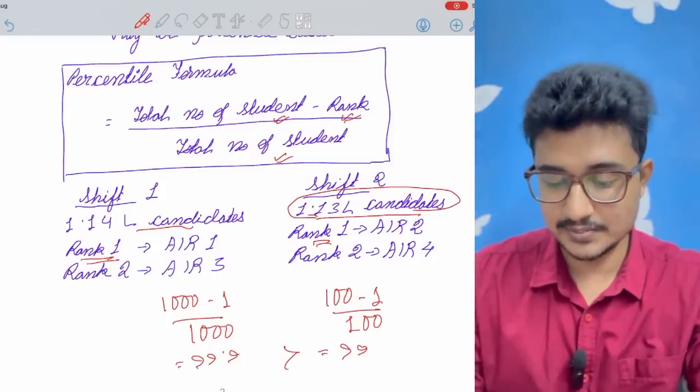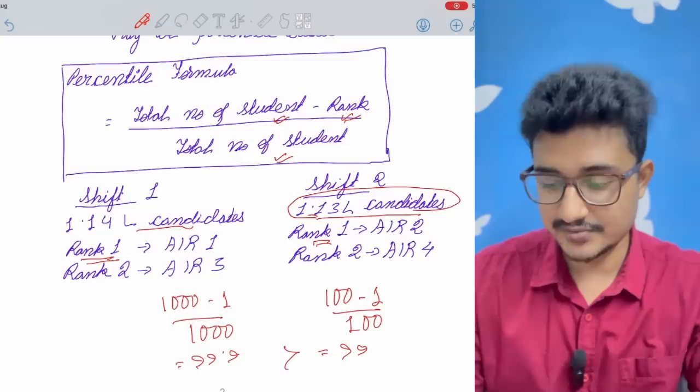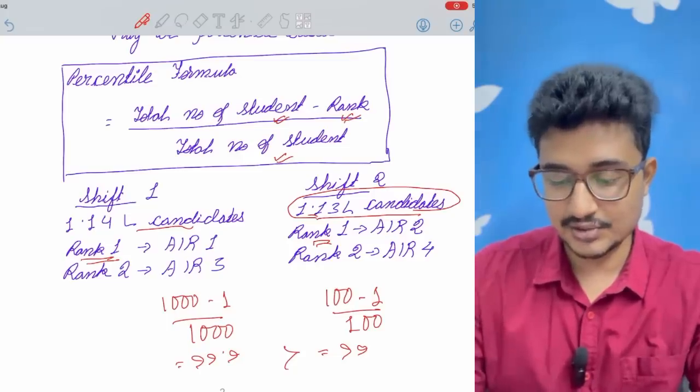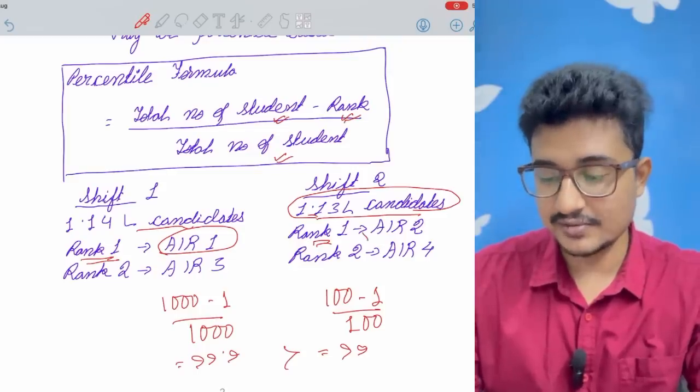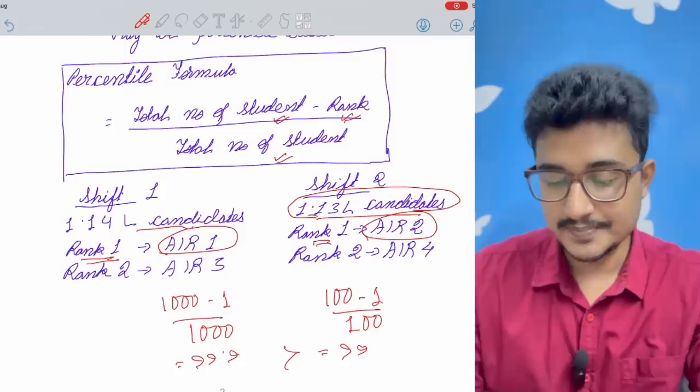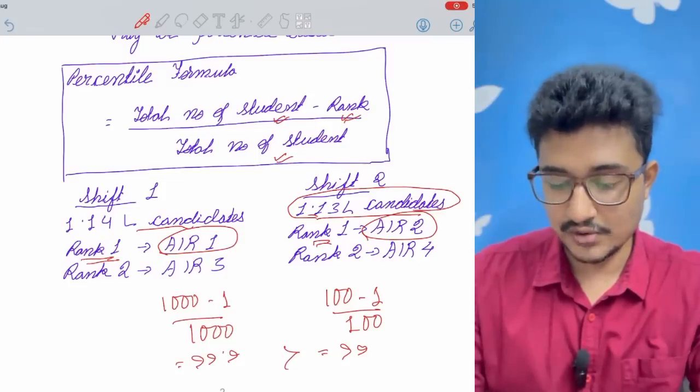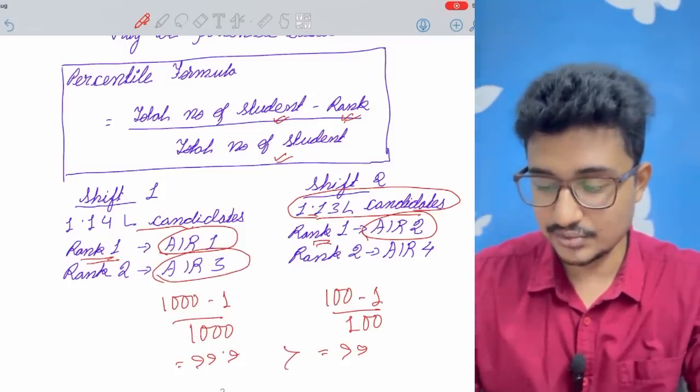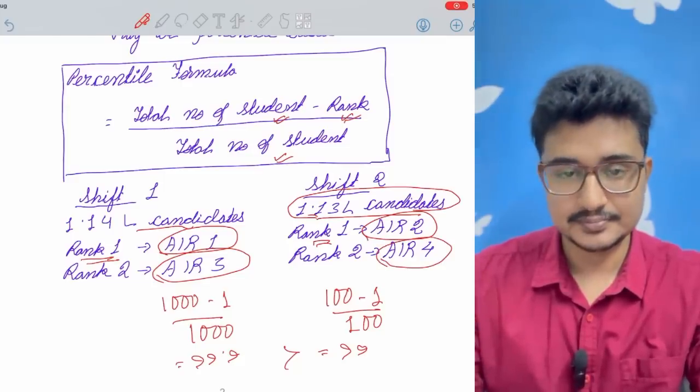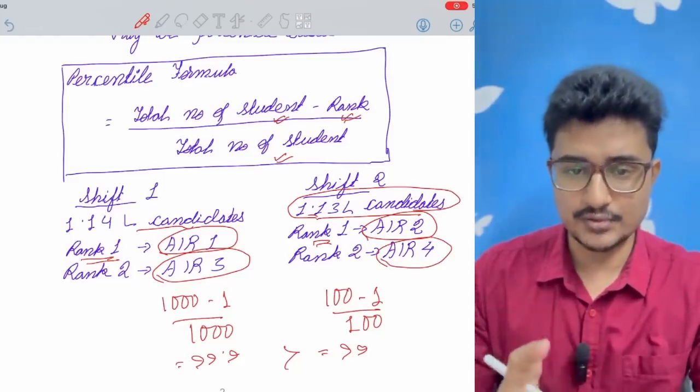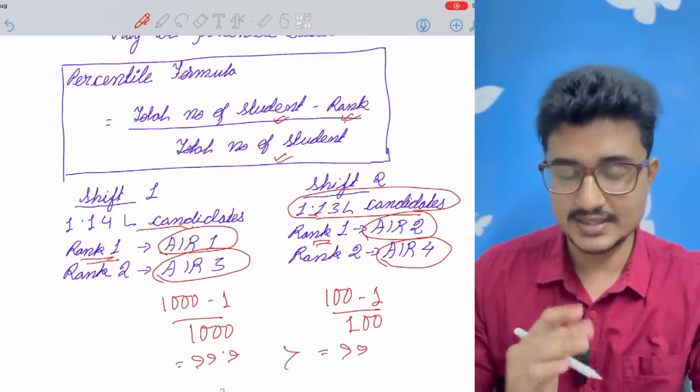If shift one has 1.14 lakh and shift two has 1.13 lakh, so the rank one of shift one will get AIR one and the rank one of shift two will get AIR two and the rank two of shift one will get AIR three and the rank two of shift two will get AIR four. Like this this is going to happen if it is percentile based.